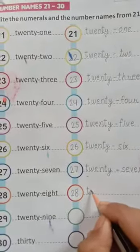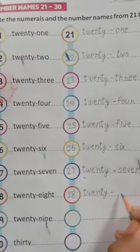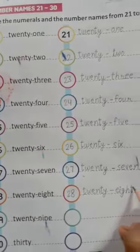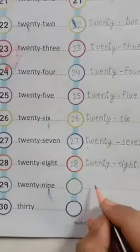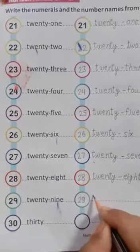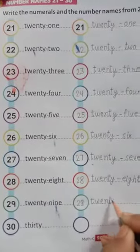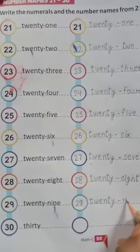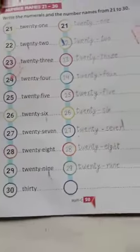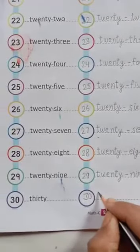T-W-E-N-T-Y, 20, E-I-G-H-T, 28. Now next is 29: T-W-E-N-T-Y-N-I-N-E, 29. And last 30: T-H-I-R-T-Y, 30.